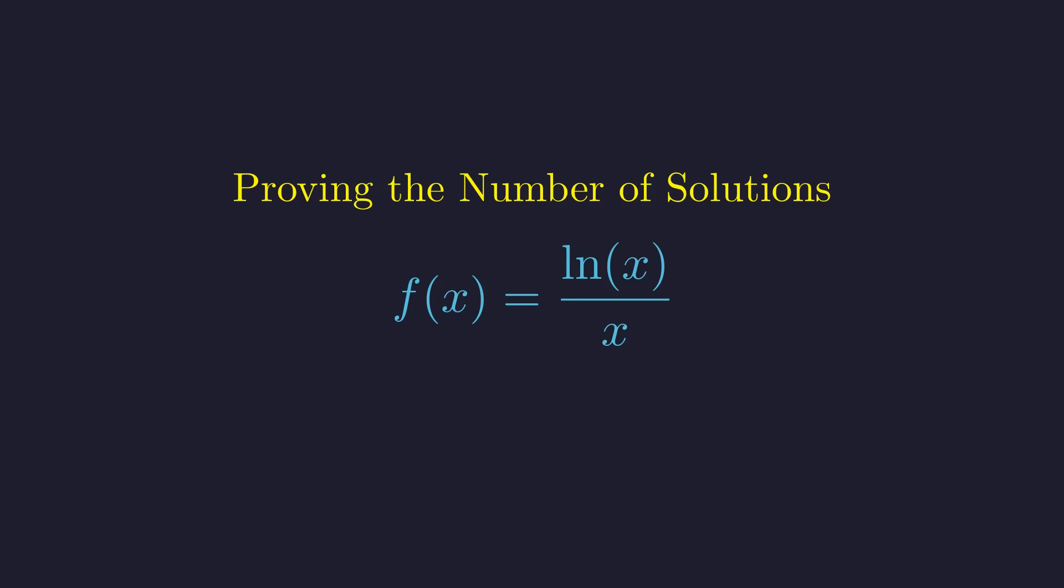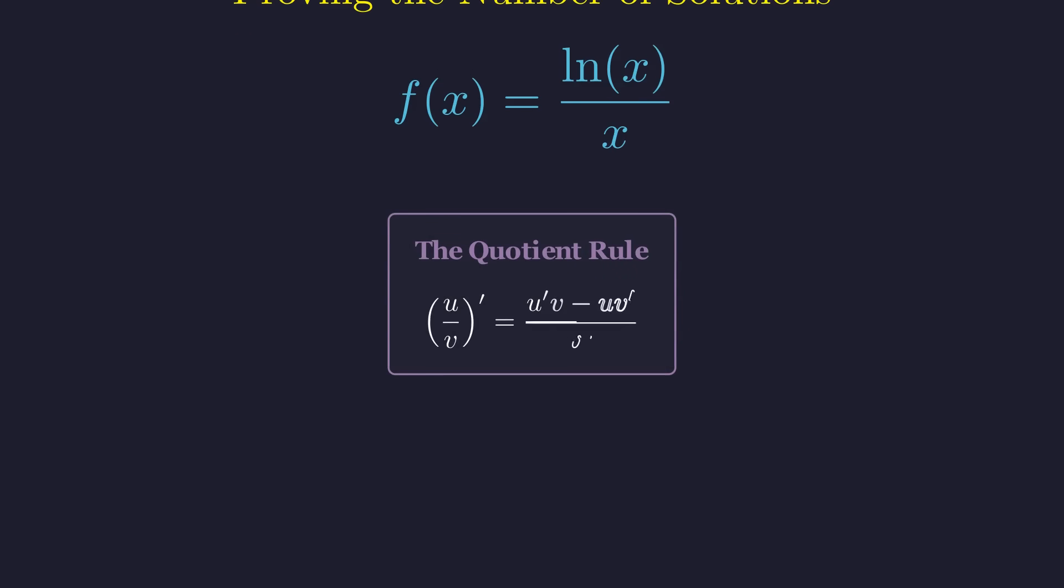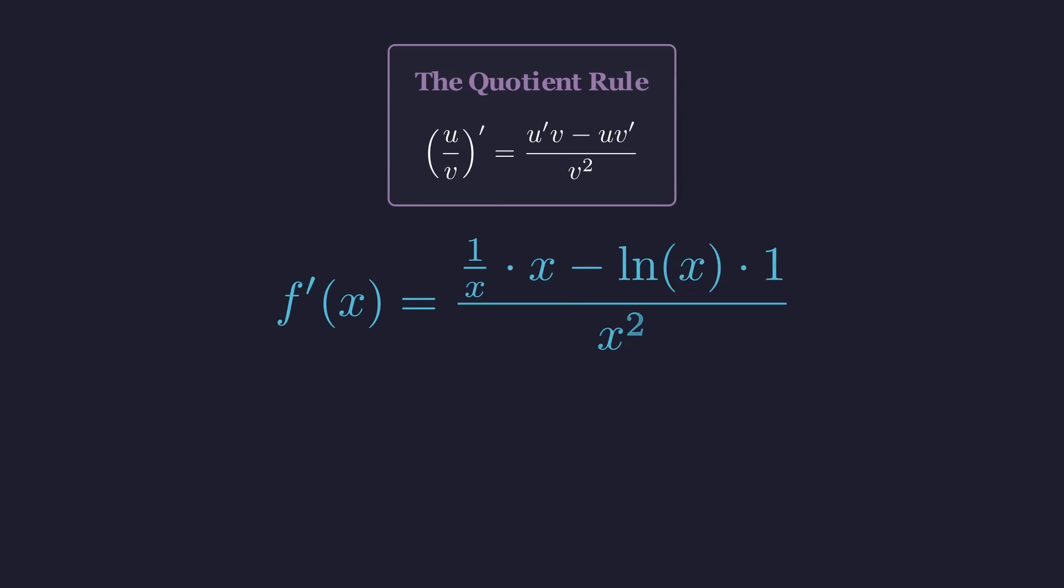To understand how this function behaves, particularly where it reaches its maximum value, we need to find its derivative. Since we're dealing with a function that's one thing divided by another, we'll need the quotient rule for derivatives. In our case, u is the natural log of x, and v is just x. The derivative of the natural log of x is 1 over x, and the derivative of x is simply 1. Applying the quotient rule gives us this expression for the derivative. Let's clean this up. In the numerator, 1 over x times x simplifies to just 1. So our derivative simplifies to this much cleaner expression.